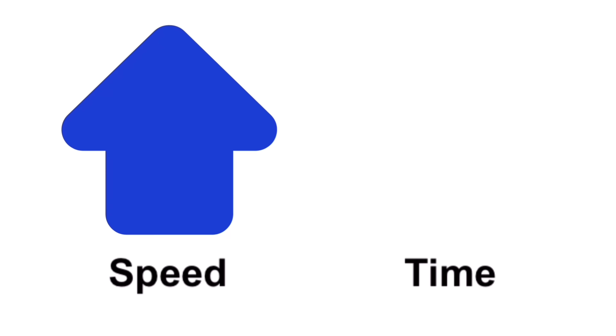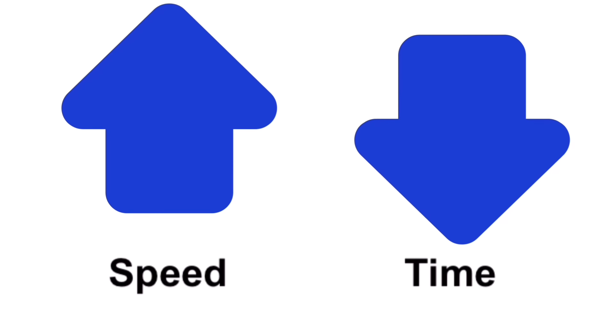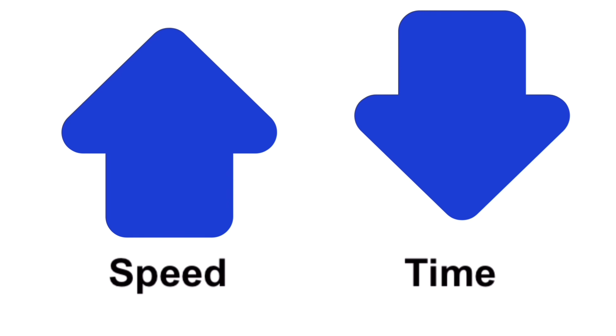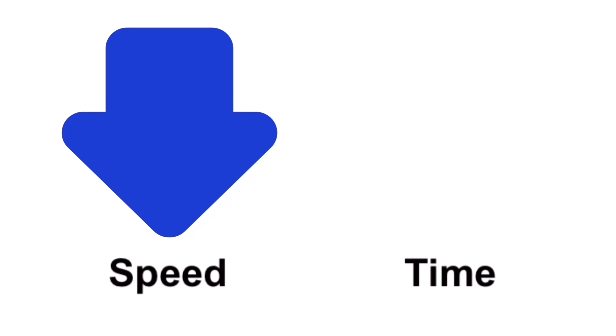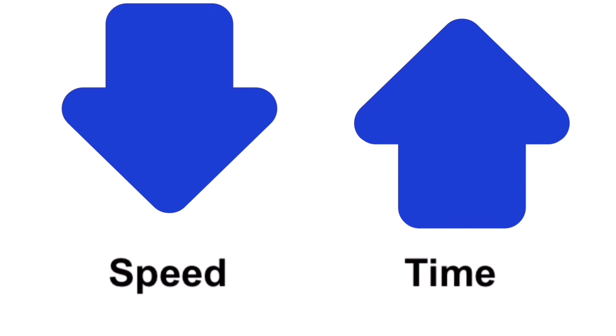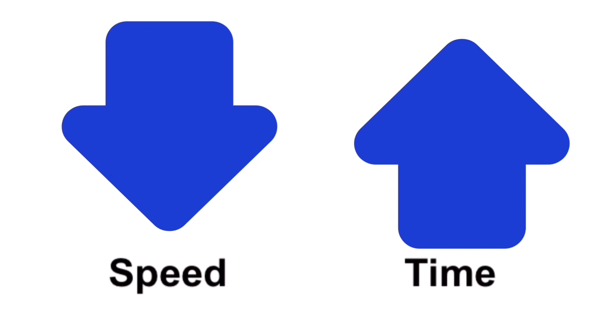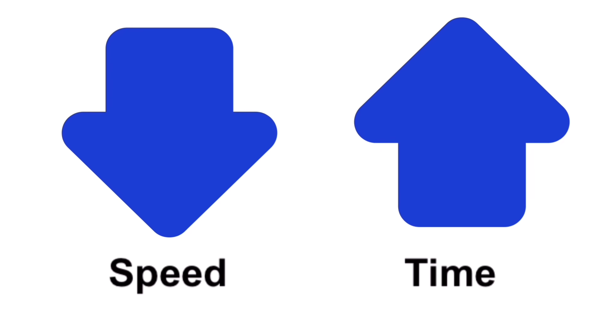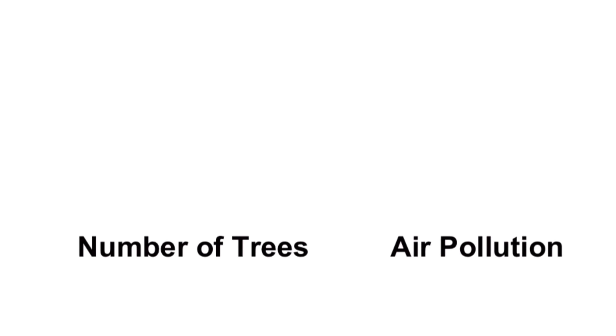Now let's look at some real-life examples of inverse variation. Speed and time are inversely proportional to each other, which means that if a car moves at a faster speed, it takes less time to reach a destination. On the other hand, if a car moves at a slower speed, then it takes more time to get to the same destination. That makes speed and time inversely proportional to each other.